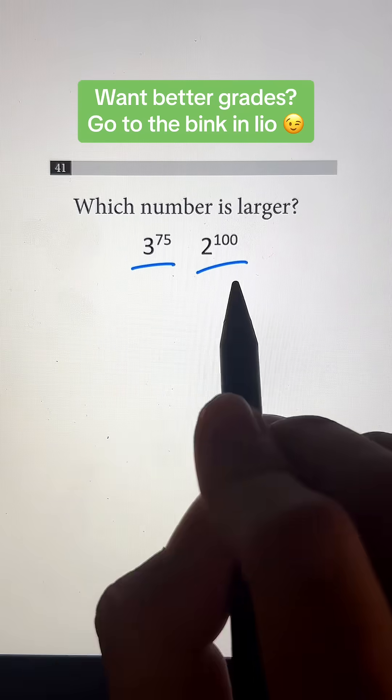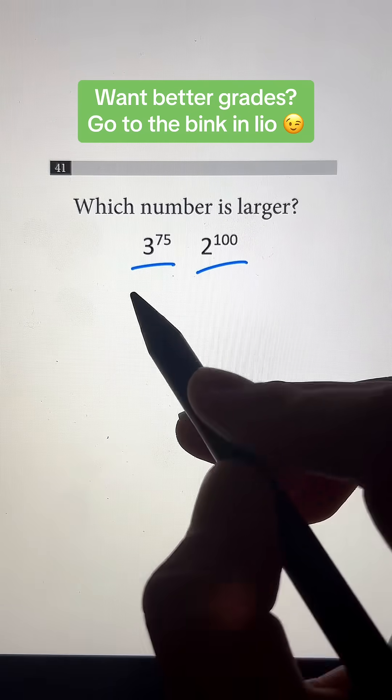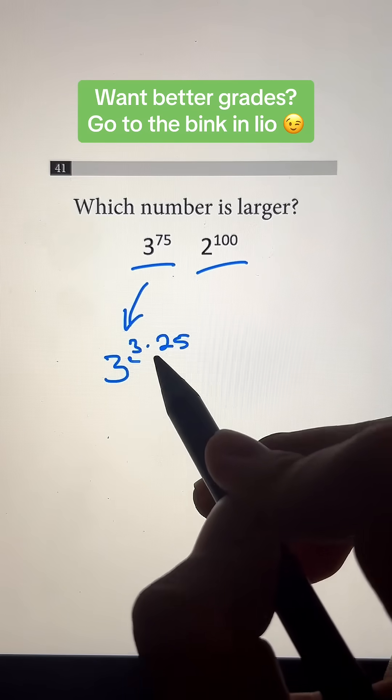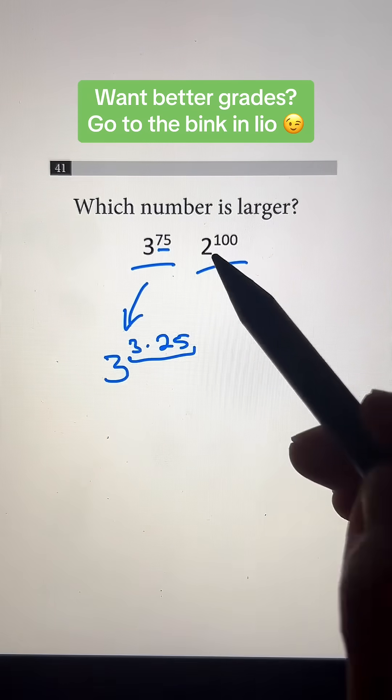Now these are absolutely atrocious numbers, so we're going to break it down. 3 to the 75th power, we can rewrite that as 3 to the 3 times 25th power because 3 times 25 is the same thing as 75.